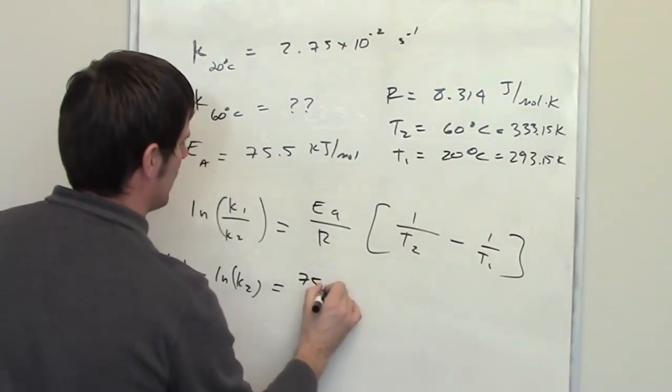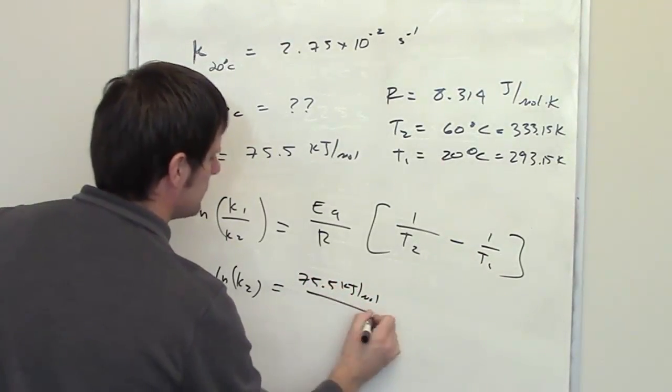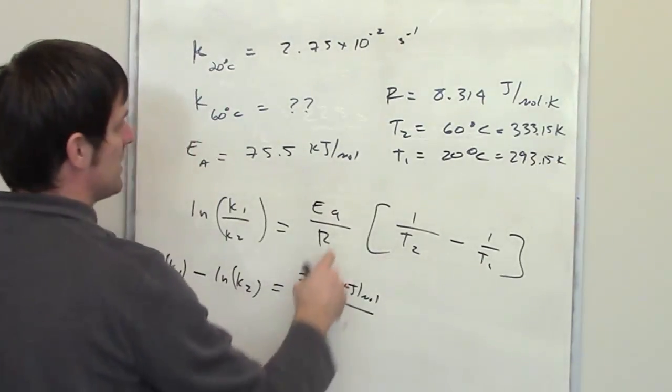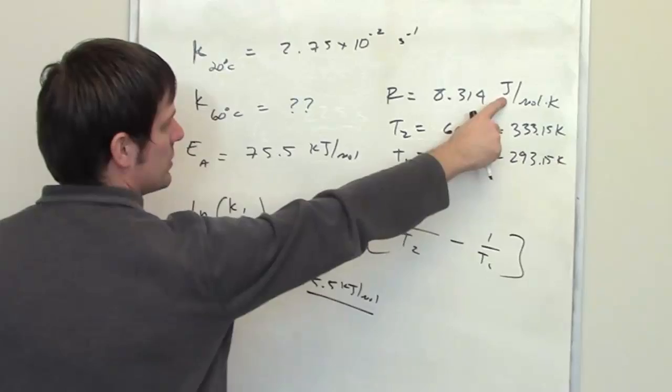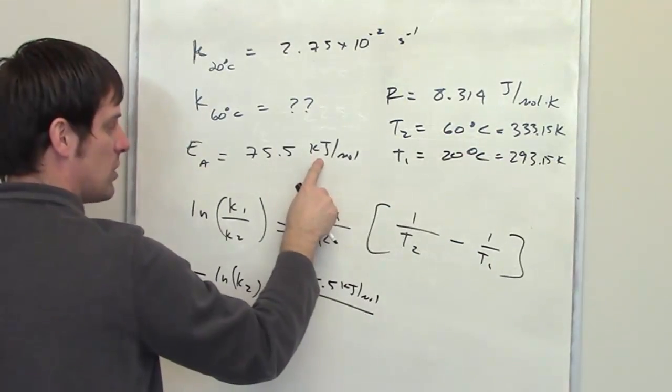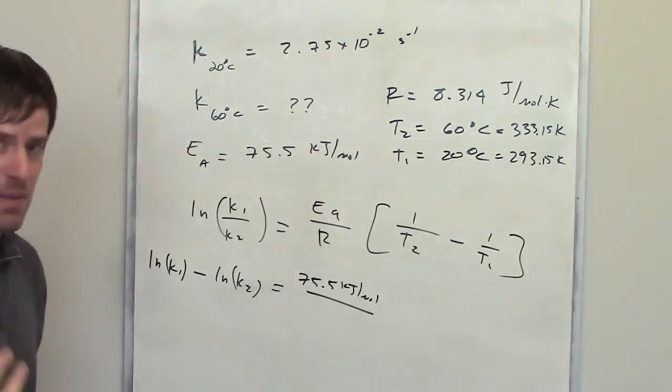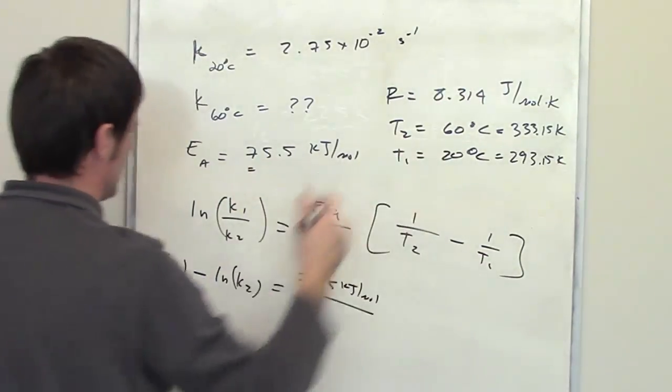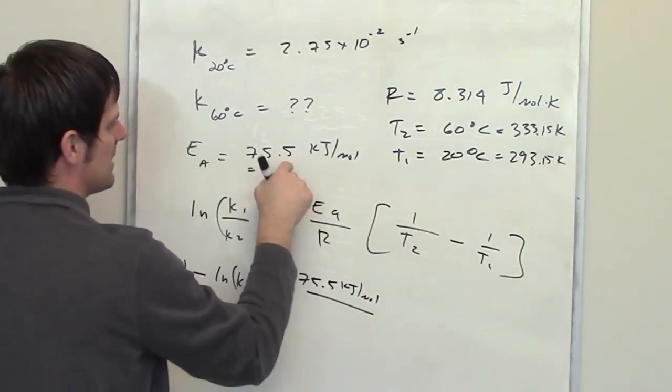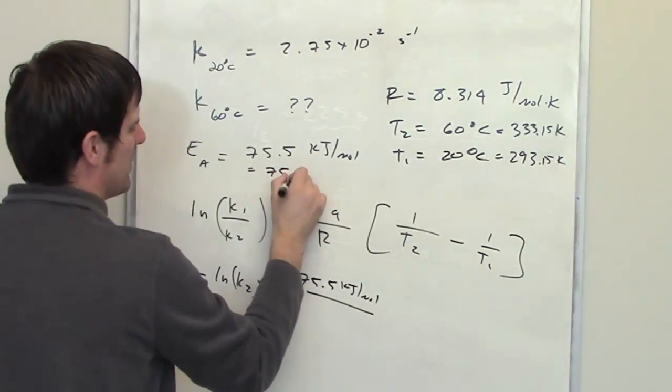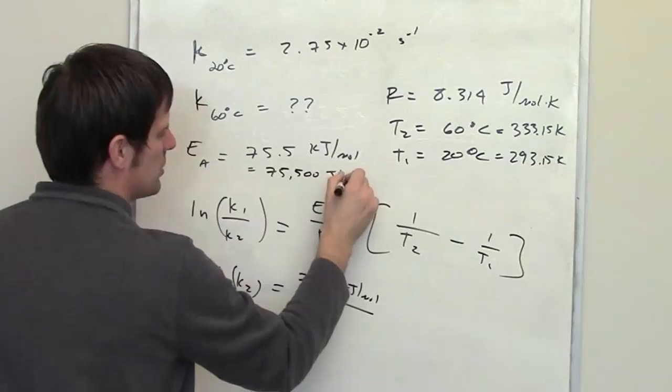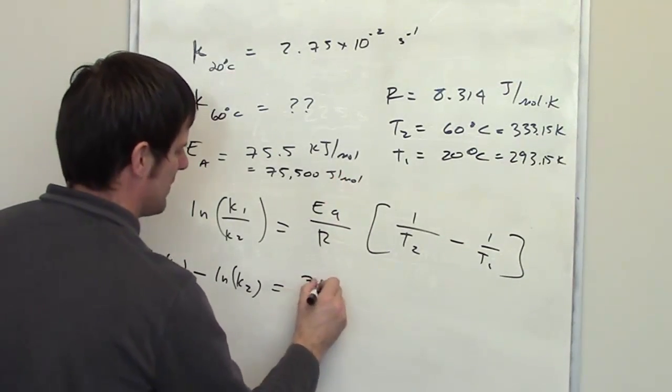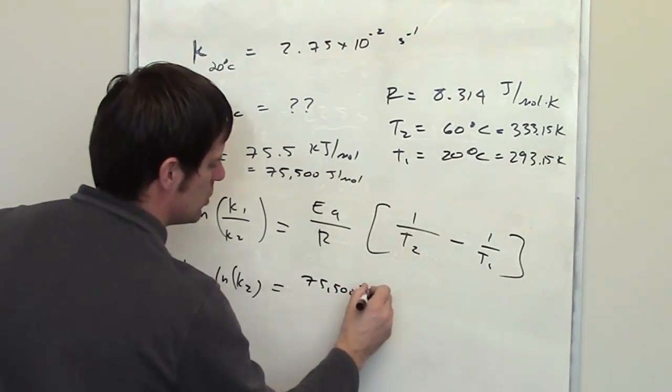Activation energy is 75.5 kJ per mole. My ideal gas constant, and in fact, in order to make my units match, because I've got joules over here for R, I've got kilojoules over here, I need my units to match. So I'm going to have to change this to joules instead of kilojoules. If I take this, multiply it by 1,000, that's 75,500 joules per mole. So I'm going to go ahead and do that. 75,500 joules per mole.